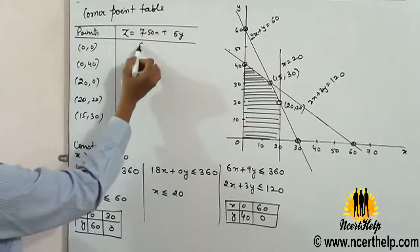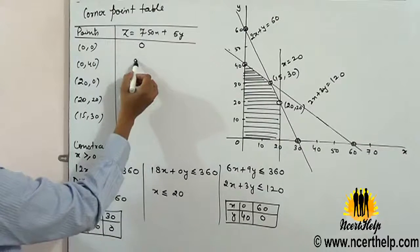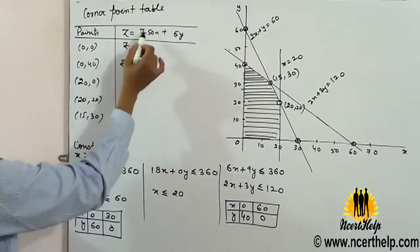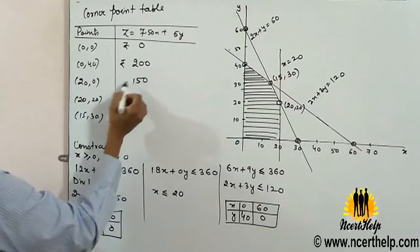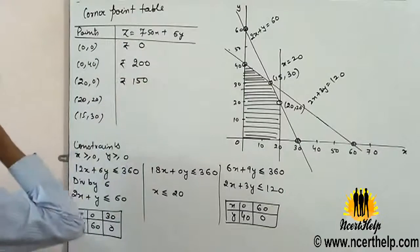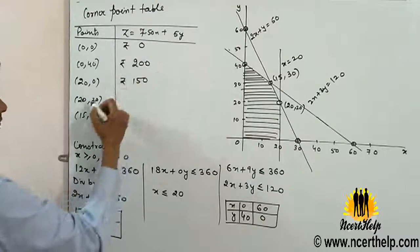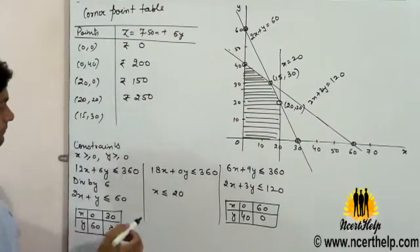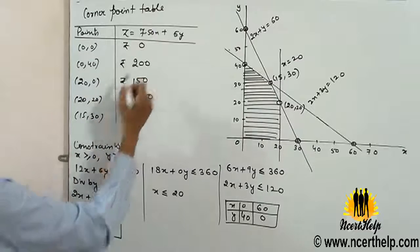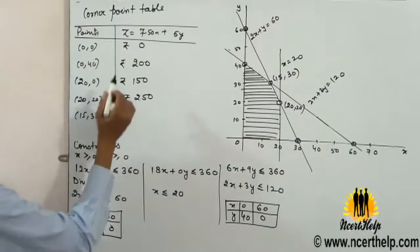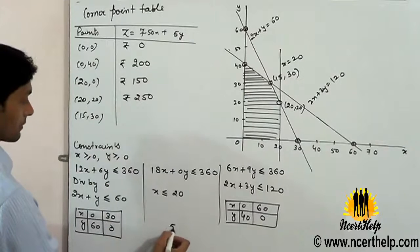Put these values inside. We will get: 0, 200, profit 150, 150 plus 100 equals 250, and 15,30 gives 150 plus 50, 262.50.